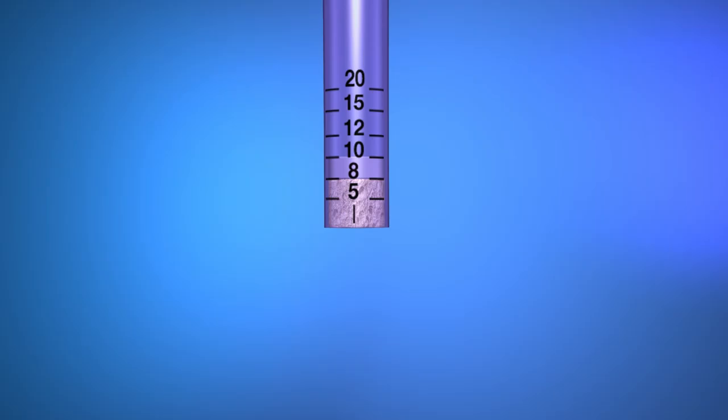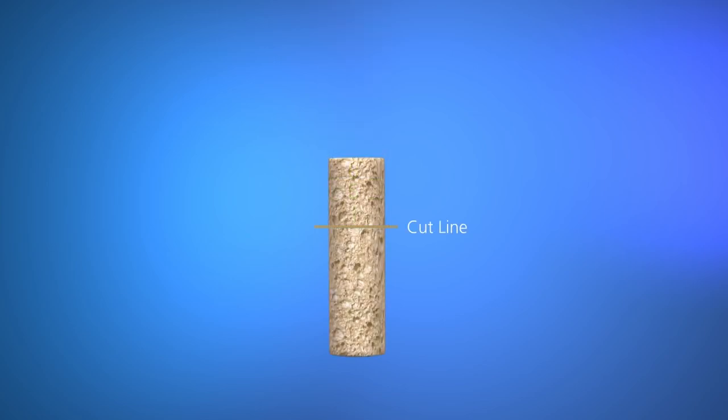Using the measurement noted during donor plug harvesting, cut the backfill plug to length on the non-chamfered end. Utilizing grasper or arthroscopy cannula, insert backfill plug into donor site hole, starting with the chamfered end.